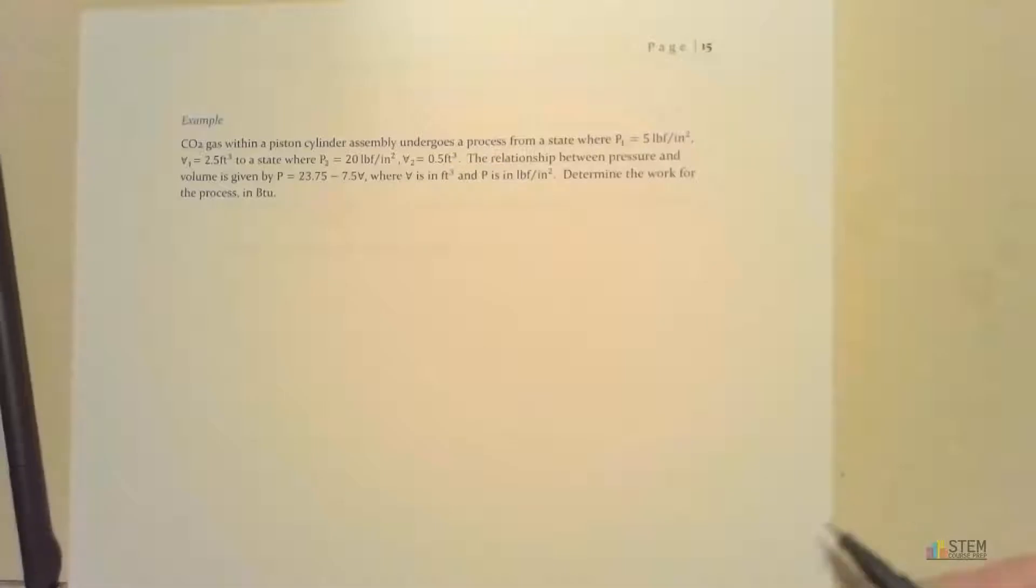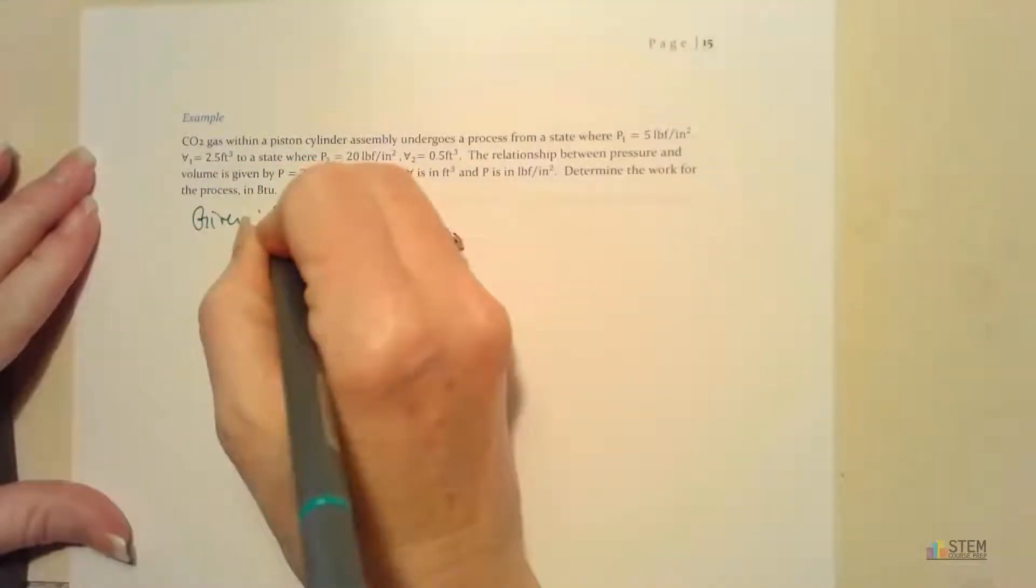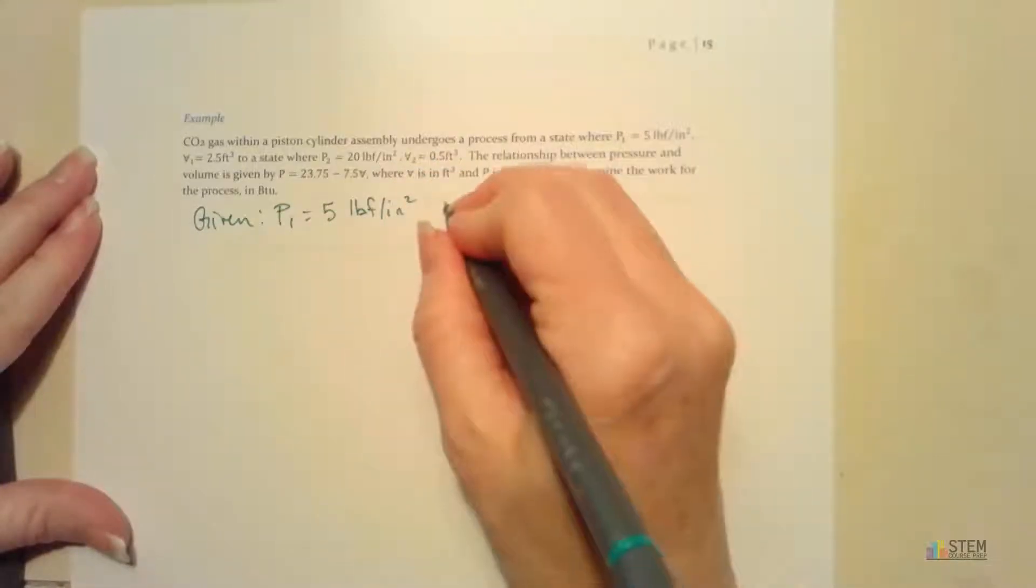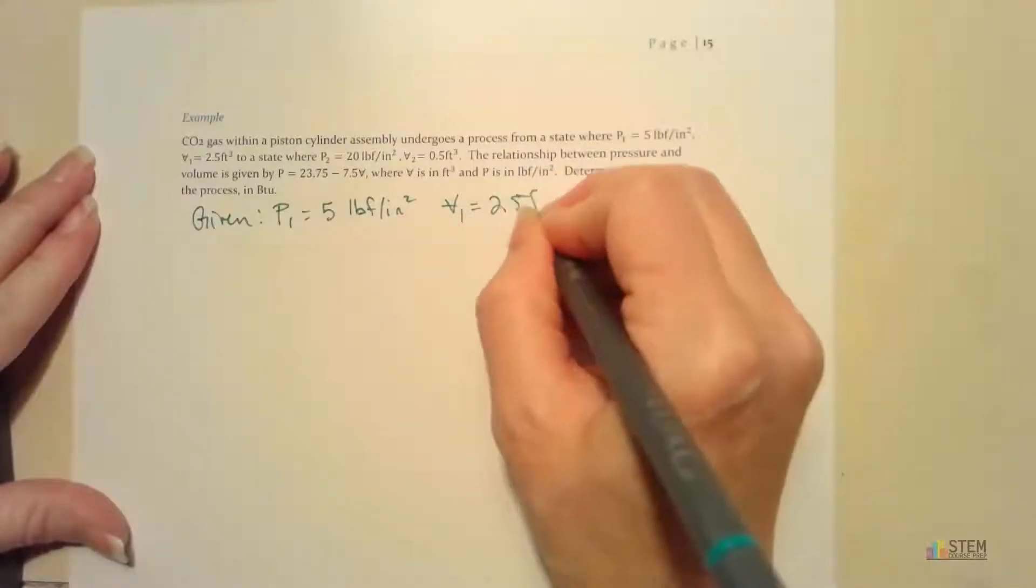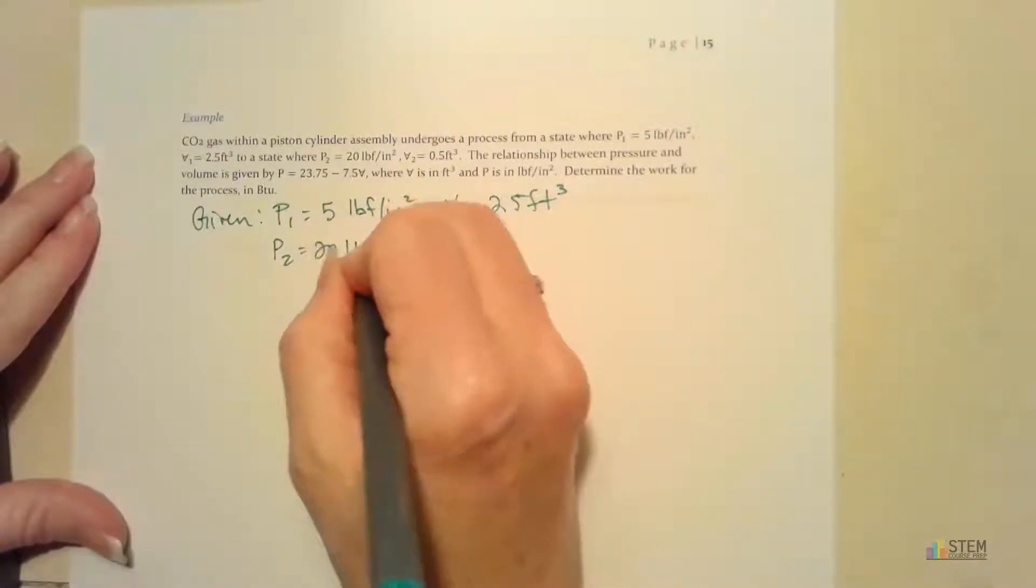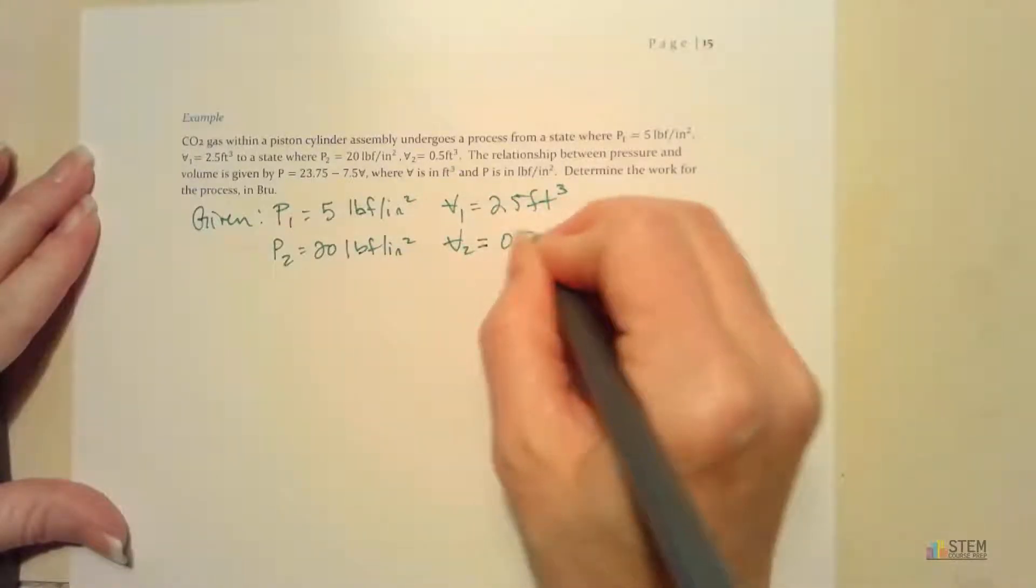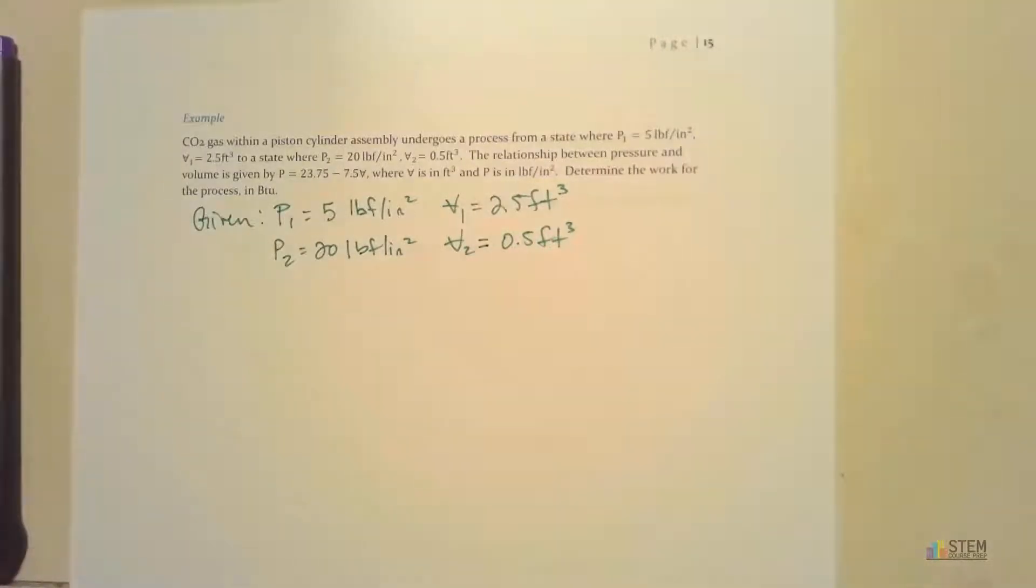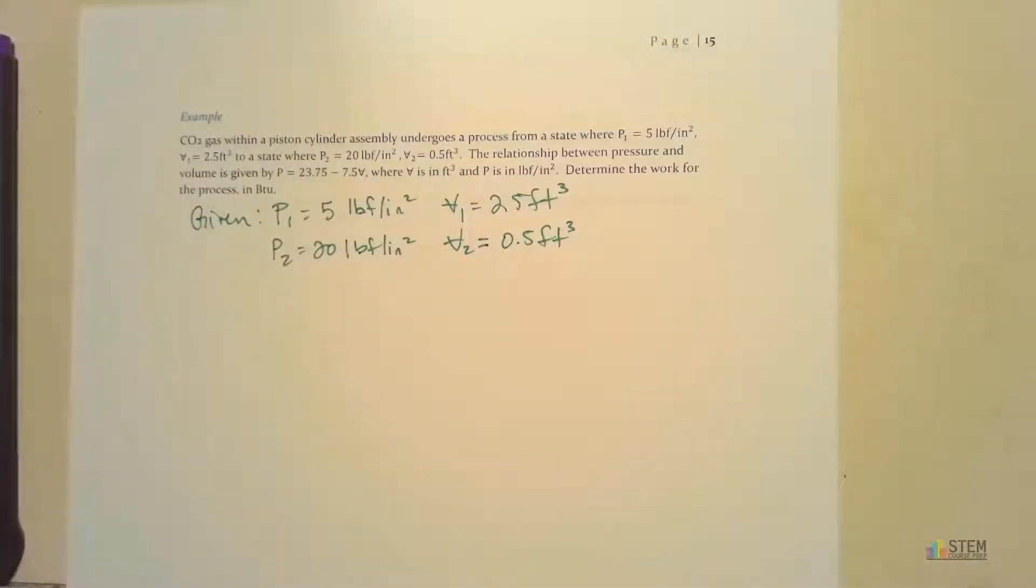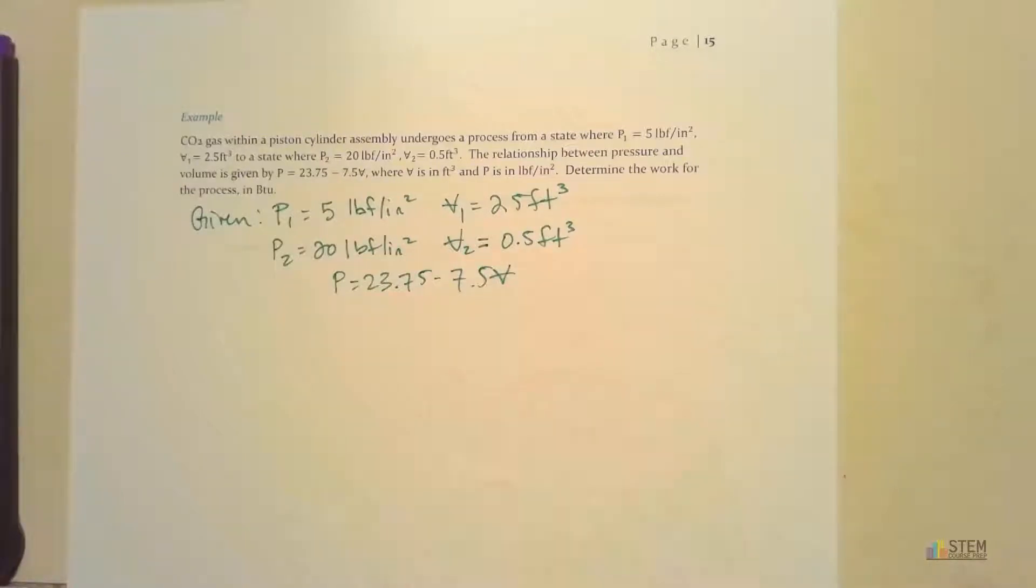Let's look at what's given here and write it down. First, our initial pressure P1 is 5 pound force per square inch, and the volume V1 is 2.5 cubic feet. At state 2, the pressure is 20 psi and volume is 0.5 cubic feet. We also have this relationship between pressure and volume that we need to make note of.